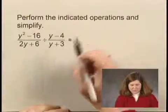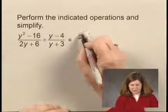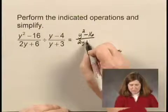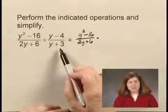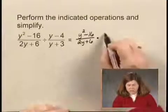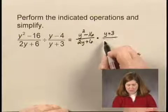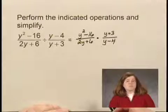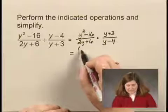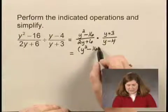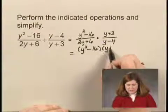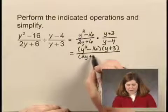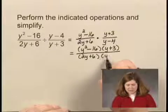So I copy the first rational expression, y squared minus 16 over 2y plus 6, and I multiply by the reciprocal of the second expression, which would be y plus 3 over y minus 4. To multiply rational expressions, I multiply numerators — y squared minus 16 times y plus 3 — and I multiply denominators — 2y plus 6 times y minus 4.